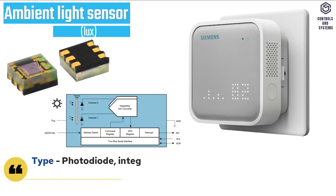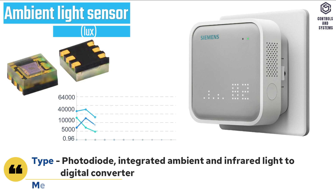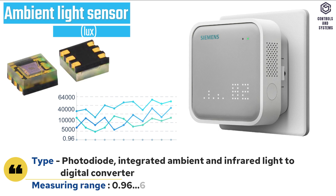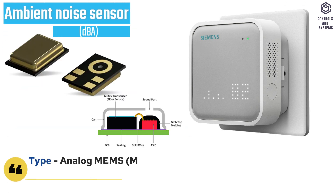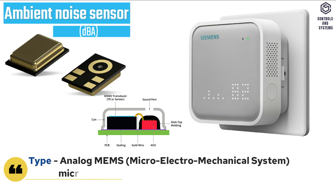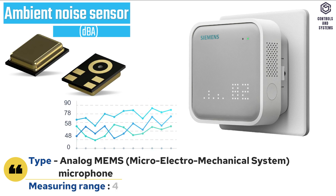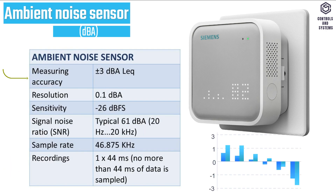The ambient noise sensor type is an analog micro-electromechanical system (MEMS) microphone, measuring range 48 to 90 dB(A). Measuring accuracy, resolution, sensitivity, and signal-to-noise ratio are shown in the table.